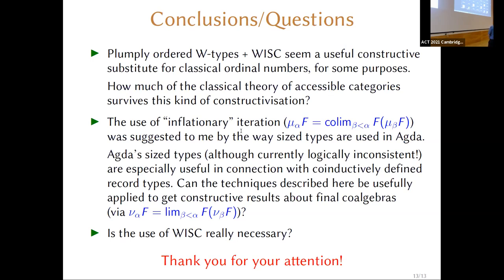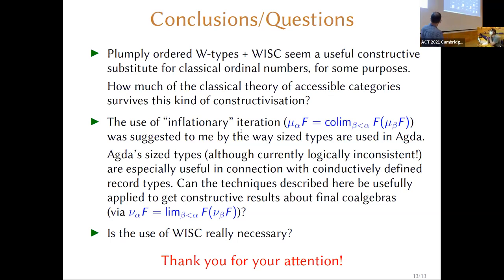Another quick question: is having the plump-ordered W-types an additional assumption on the topos? No — every topos with a natural number object has enough sizes, has W-types, and the plump order is perfectly definable. No extra assumption needed.